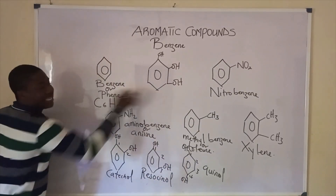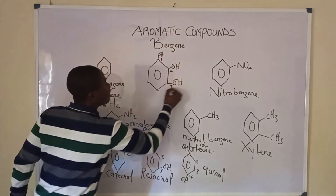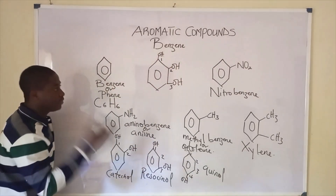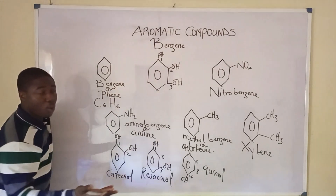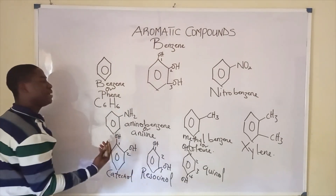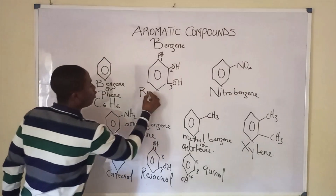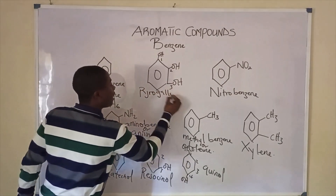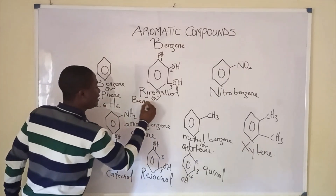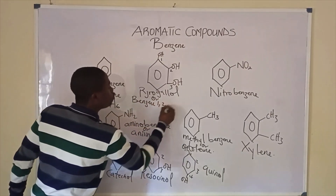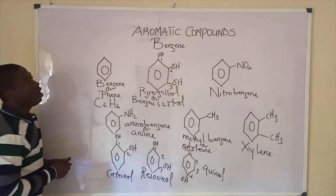This is another benzene derivative. In this case, there are three OH groups attached to the benzene structure. This compound is commonly called pyrogallol, also called benzene-1,2,3-triol.